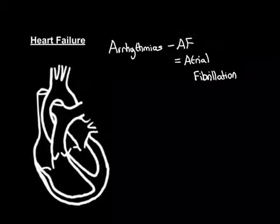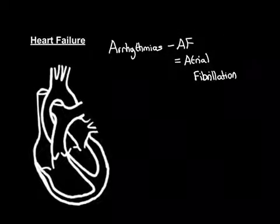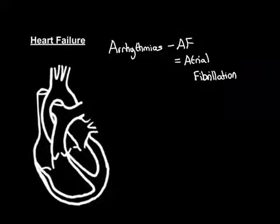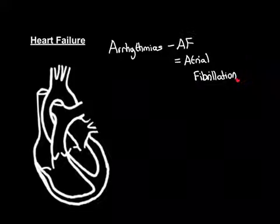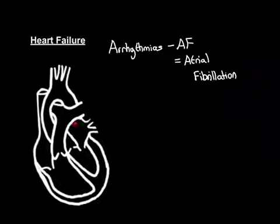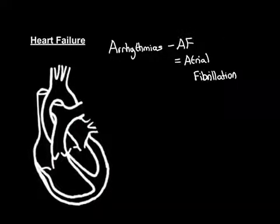Who gets atrial fibrillation? Generally it's older people — something that happens when you get older if you are unlucky — where something goes wrong with the atria leading to utter chaos with regards to electrical activity. Fibrillation means the atria are no longer contracting properly. Instead they are fibrillating, meaning shuddering. We discussed previously how the atria contract and push blood into the ventricles, but in atrial fibrillation they no longer do that.